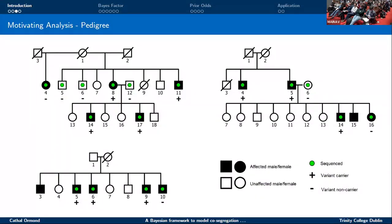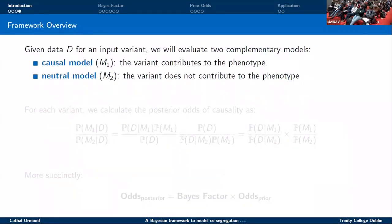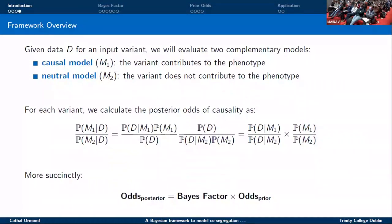This motivated developing a unified framework to quantitatively measure co-segregation in smaller pedigrees while integrating variant-level metrics. Our Bayesian framework considers two models: the variant contributes to the phenotype (causal) versus the variant is independent of the phenotype (neutral). We calculate posterior odds of causality as our Bayes factor multiplied by prior odds for causality, integrating co-segregation as the Bayes factor and variant-level metrics in the prior odds.